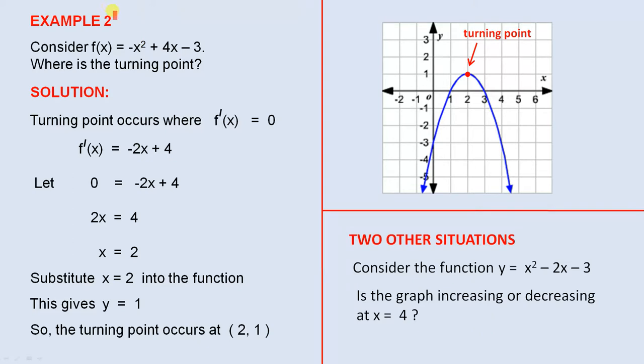So if we differentiate this original function, we get f'(x) equals minus 2x plus 4. So to find where the turning point occurs, we let 0 equals minus 2x plus 4, therefore 2x equals 4, therefore x equals 2.